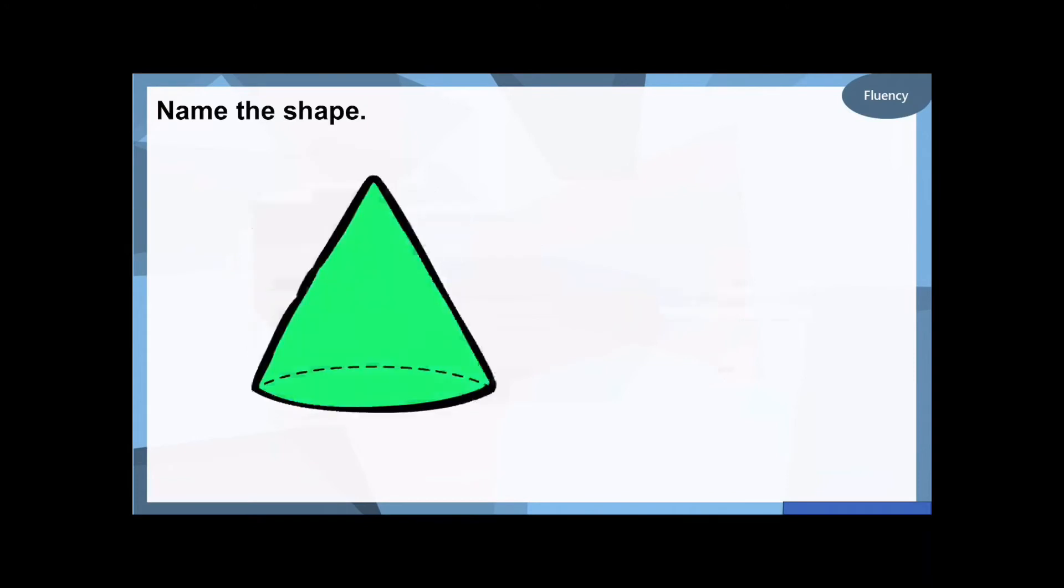Okay, this next shape. Remember what we said. It's got one circle face. It's got one curved side all the way around. Remember, we said if you turn it upside down, it kind of looks like something you put ice cream in. Well done if you've said it's a cone.